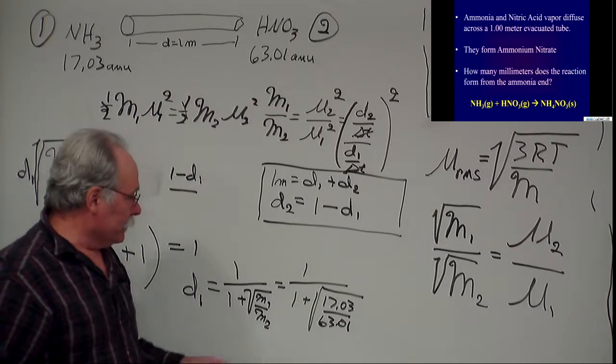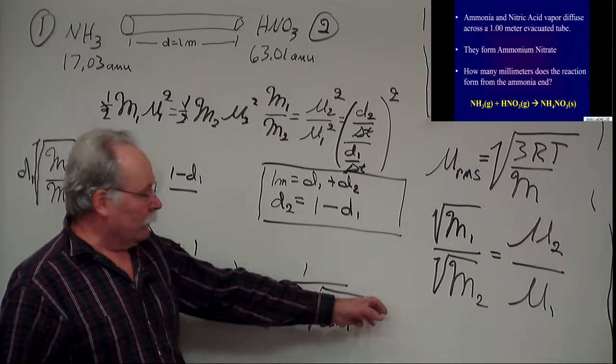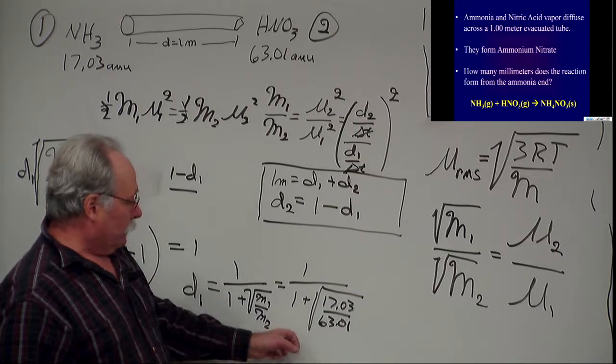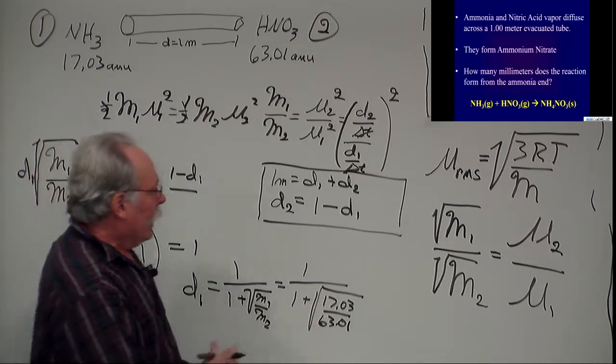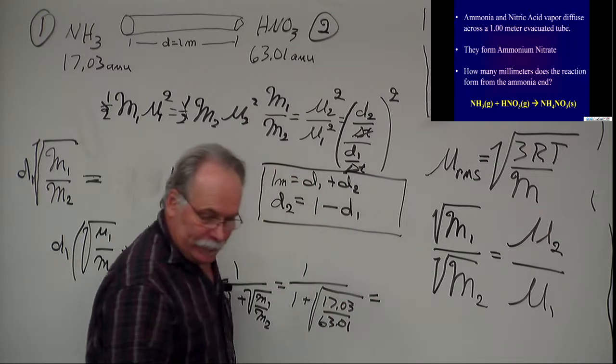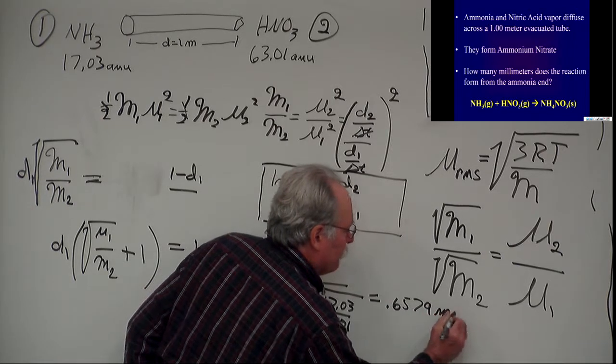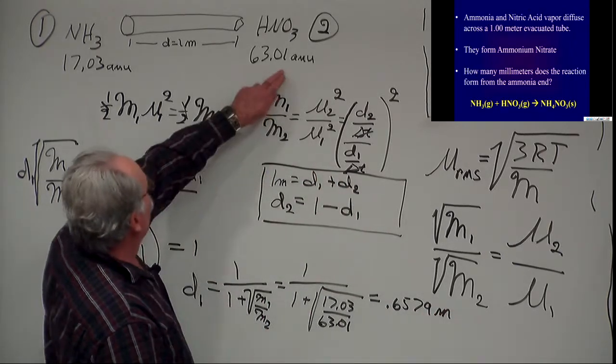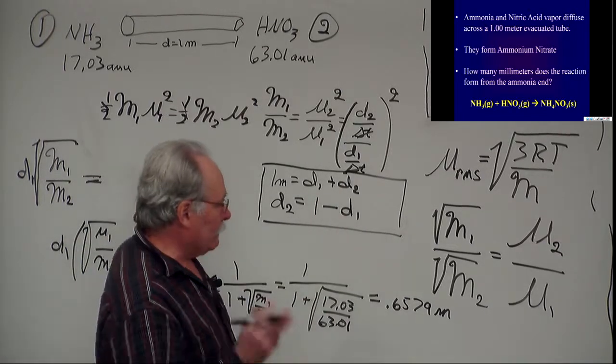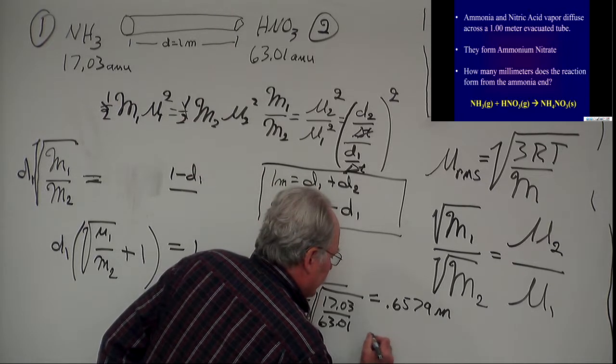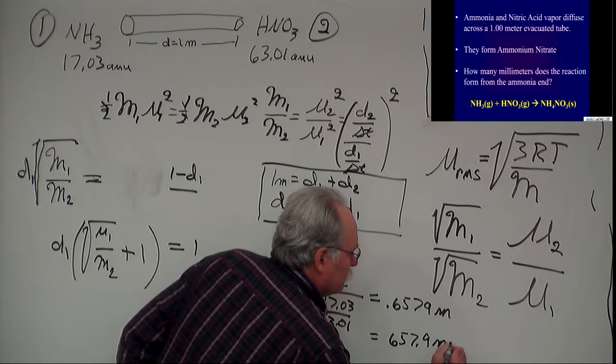Now what I'll do is I'll get out my calculator. I'll take 17.03 divided by 63.01 and hit the square root sign. Then I'll do a plus 1, and then equals, and then I'll take the reciprocal sign. And when I do this, I get 0.6579 meters. And these numbers had four sig figs, so I'm going to use four sig figs in my answer. And I look at the question, and it asks for millimeters. So this becomes 657.9 millimeters.